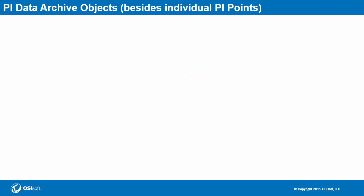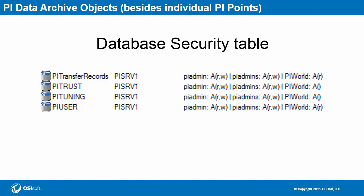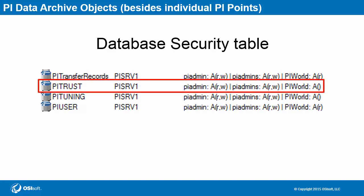Besides PI points, there are plenty of other PI data archive resources. Most of them are found in what's called the database security table. Here, you grant access to data structures on a global level, unlike the individual PI point basis we've talked about so far. For example, security for reading or modifying PI trusts as a whole can be set on the PI trust table. We see here that PI admin, PI admins, and PI world are listed by default — the first two have both read and write privileges, while PI world is present but doesn't have any permissions. This is effectively the same as not even listing PI world at all. But these are just defaults, so in your own system, take care to state explicitly which PI identities should be given access.